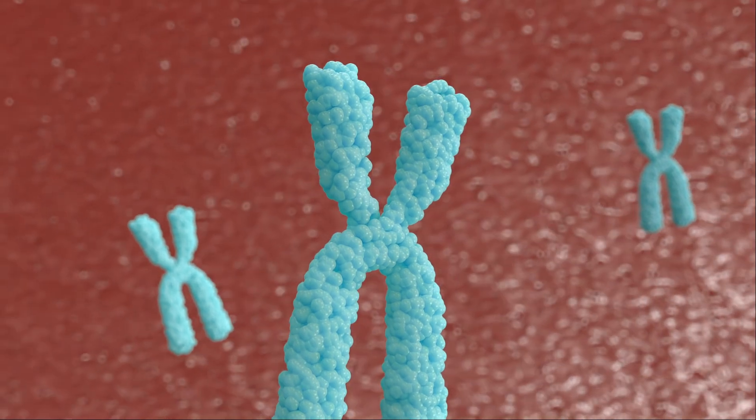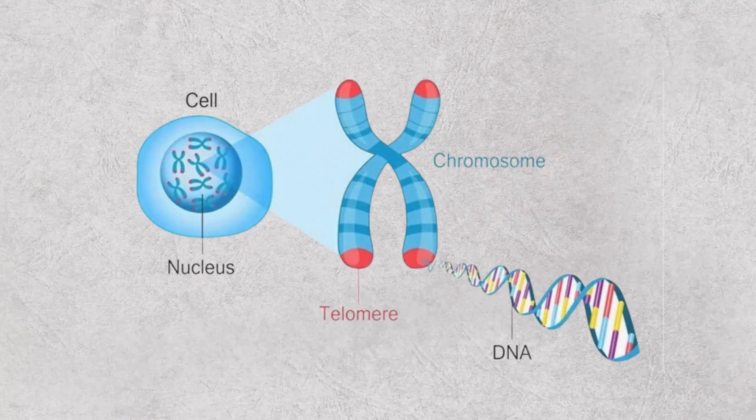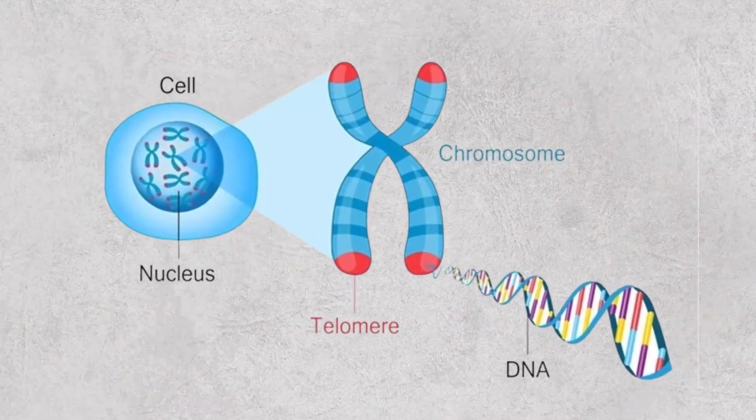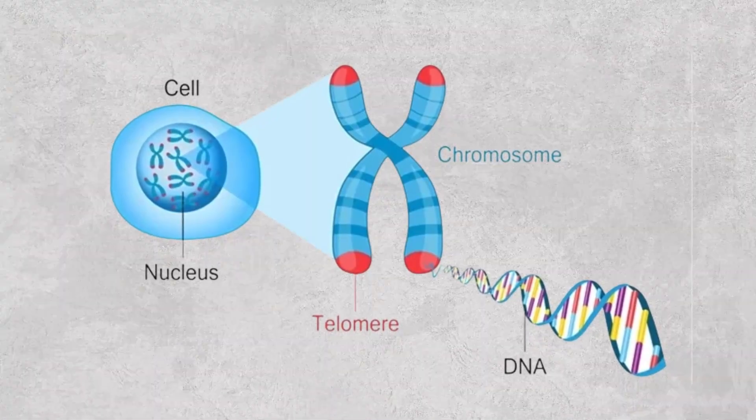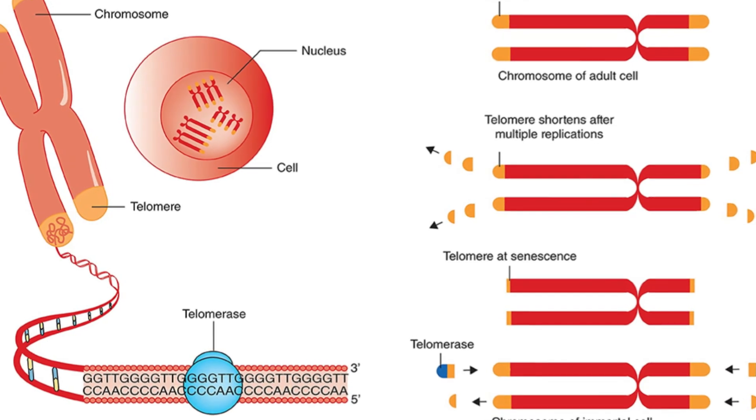At the tips of chromosomes lie protective caps called telomeres. They repeat the same short sequence over and over like a buffer zone. Special proteins and G-quadruplex structures shield these ends from damage. Without telomeres, DNA would unravel with each cell division.